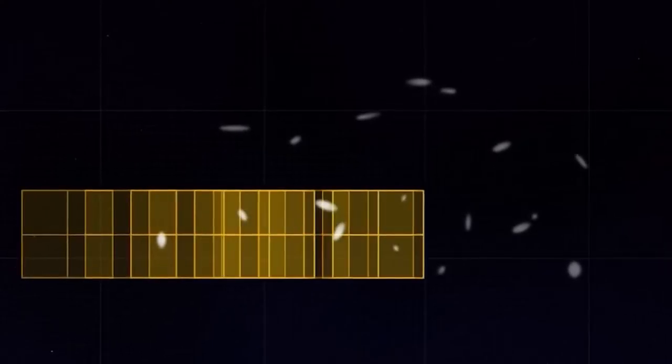This effectively combined all 18 mirror segments into a single mirror, resulting in a single star with eight massive diffraction spikes and two smaller horizontal ones.